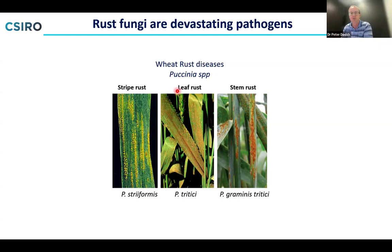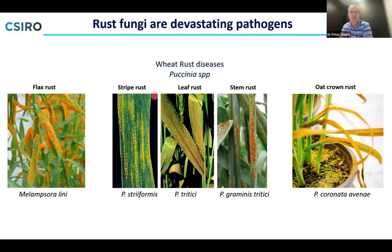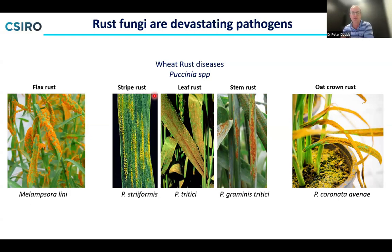Our real focus is trying to breed better resistance to these diseases into wheat crops and understand how the pathogen evolves in response to host resistance. We also work on flax rust, which was established many years ago as a model system, and oat crown rust. But there are many other important rust diseases — of soybean, maize, apples and pears — all of economic importance in different systems.